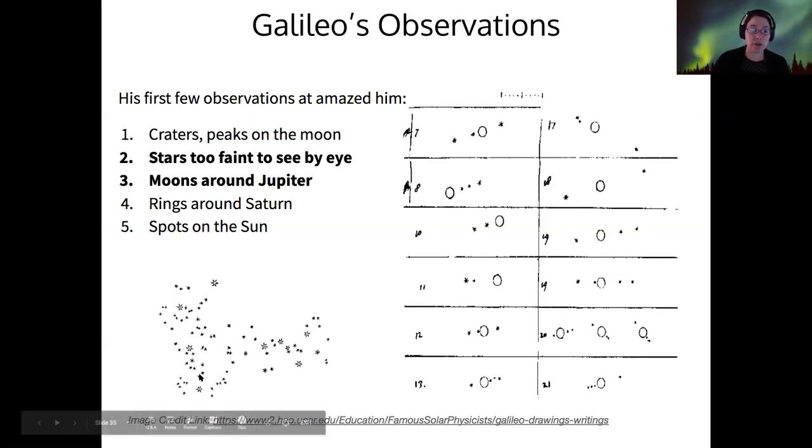Galileo also was able to observe stars that were too faint to see by the naked eye and the moons around Jupiter. Jupiter has four major moons: Io, Europa, Ganymede, and Callisto that orbit. Galileo was able to see these through his telescope and sketch their positions in the sky around Jupiter at different times or at the same time every day, and therefore kind of map out their orbits.